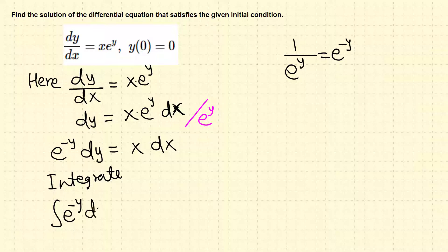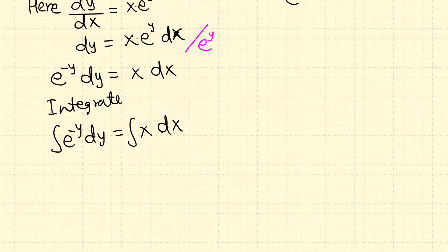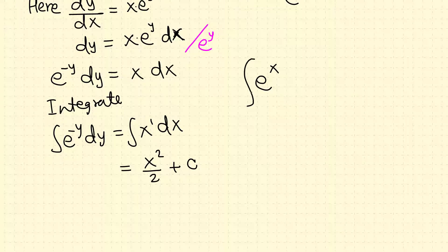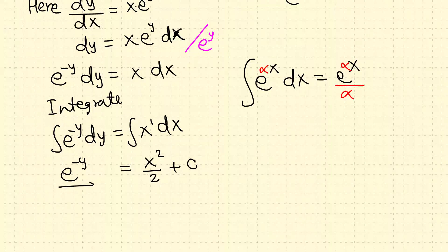So the integral of e to the negative y dy equals the integral of x dx. The right side is straightforward using the power rule: x squared over 2 plus c. On the left, we know that when we have e raised to alpha times x, the antiderivative is itself divided by alpha. So here with e raised to negative 1 times y, the antiderivative is e to the negative y divided by negative 1.